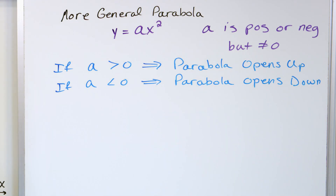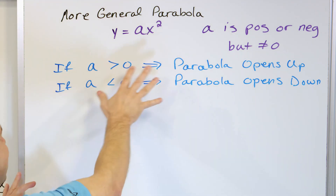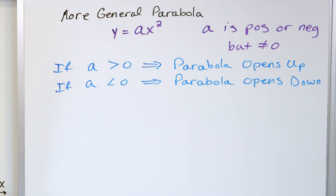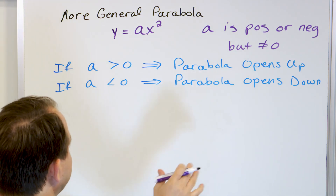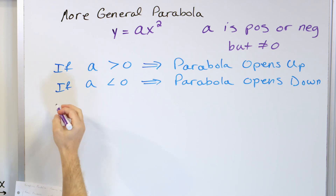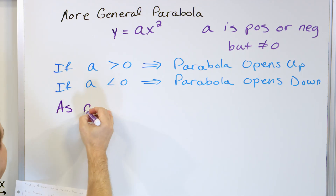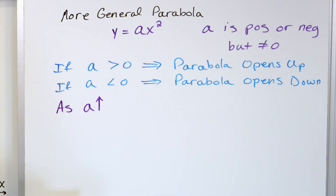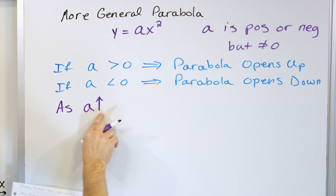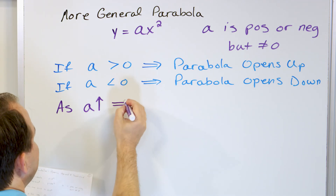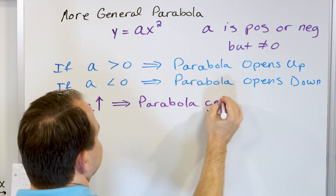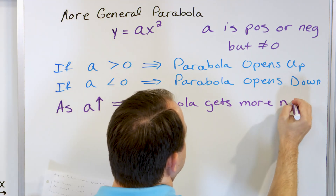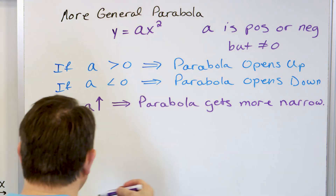Let me give you a couple of examples to show what this actually means, explain why it works, and then do a computer demo so you can see more clearly what's going on. One more thing: as the value of a increases — gets bigger and bigger — the parabola gets more narrow.